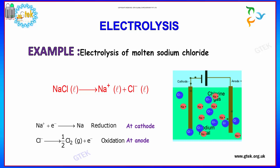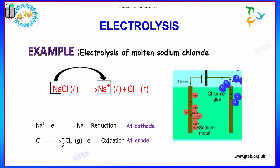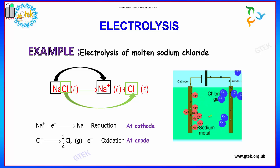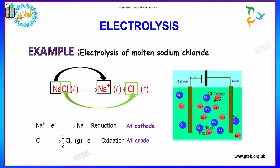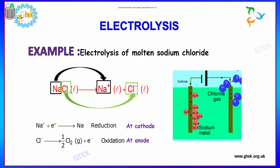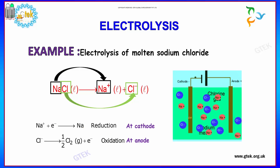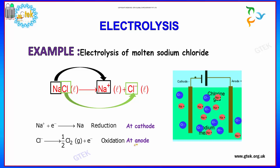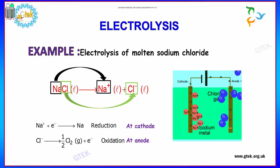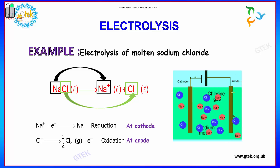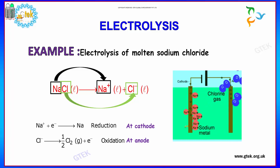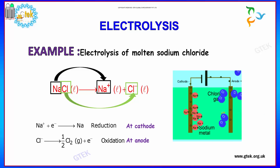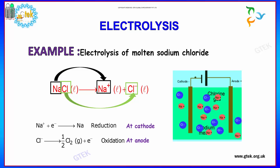Now we'll talk about electrolysis. Electrolysis is the process of migration of electrons from cathode to anode in the presence of an electrolyte. Sodium chloride dissociates into Na+ and Cl-. Na+ gains an electron to form sodium — that's reduction, happening at the cathode. Chlorine gives an electron at the anode — that's oxidation. So electrons move from anode towards cathode.